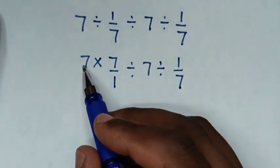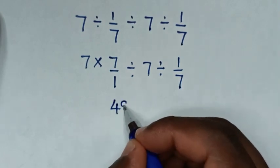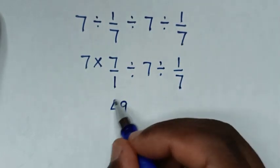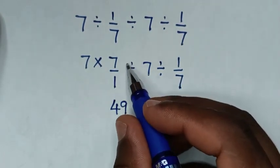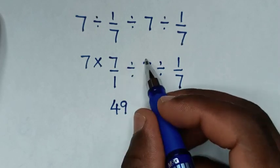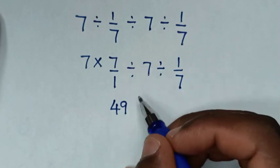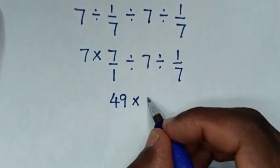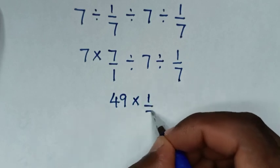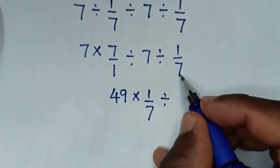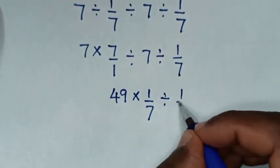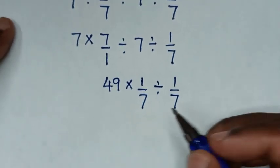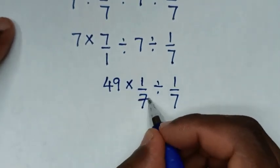In the next step, 7 times 7 is 49; 49 divided by 1 is 49. Then divide by 7, which is the same as times the reciprocal of 7, which is 1 over 7. Then divide by 1 over 7.